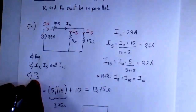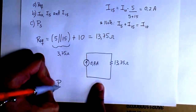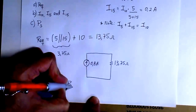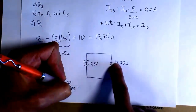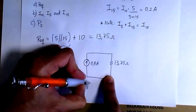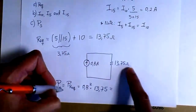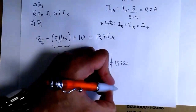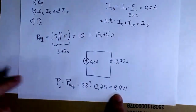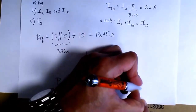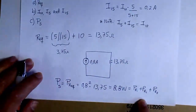Finally, for the power provided by the source, we use the final equivalent circuit since the power provided equals the power dissipated by R_equivalent. The total current flowing through R_equivalent is 0.8 amps, so we take that squared and multiply by R_equivalent, and we get 8.8 watts. This is equivalent to computing the power dissipated by each individual resistor and then summing them.